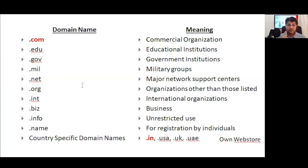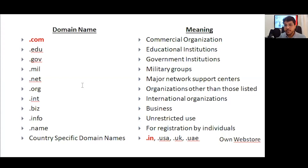So .com and country-specific domain names are where you should be looking. Always give first preference to .com because with a .com extension comes brand identity and brand trust. Whether you start by selling locally, nationally, or eventually go global, .com is the extension that will be accepted readily in any target market.